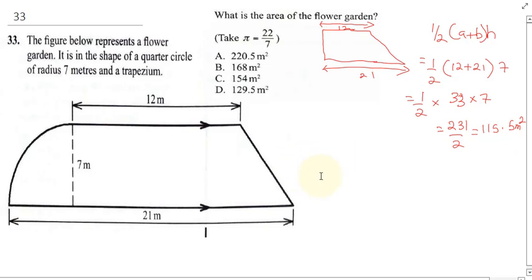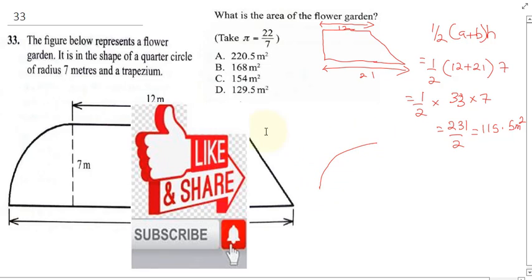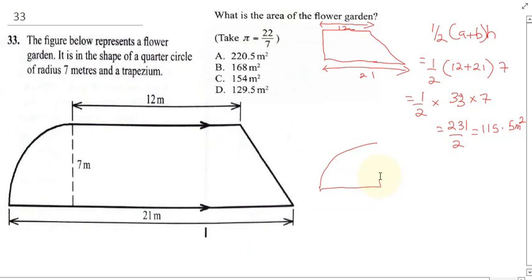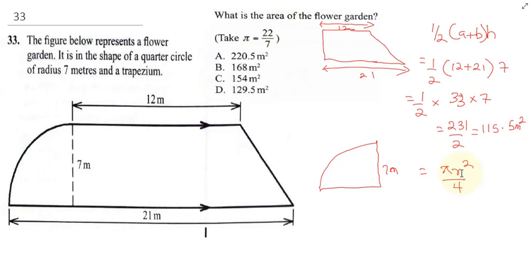Now for the circle part which is a quarter circle, this is 7 meters. To find the area will be pi r squared divided by 4. Why are we dividing by 4? Remember a full circle, so for you to get a quarter circle you need to divide by 4.